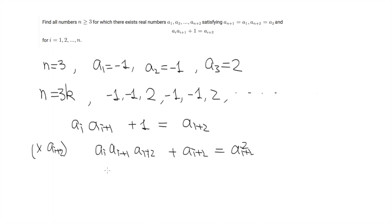The second thing is to multiply this relationship by a_{i-1}. In this case we get a_{i-1} a_i a_{i+1} plus a_{i-1} equals a_{i+2} a_{i-1}.